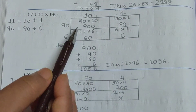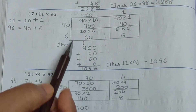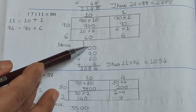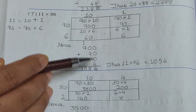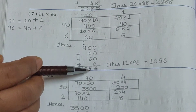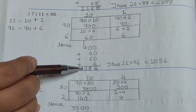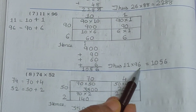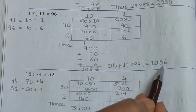Hence 900 plus 90 plus 60 plus 6. 0 plus 0 plus 0 plus 6 is 6. 0 plus 9 plus 6 is 15 — 5, carry 1. 1 plus 9 is 10. Thus 11 multiplied by 96 is equal to 1056.